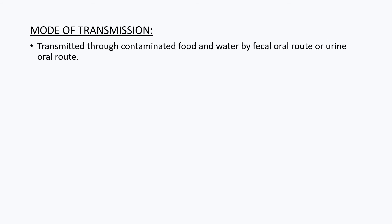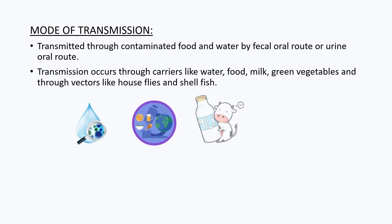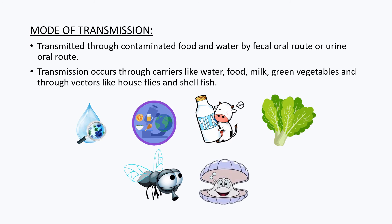Typhoid gets transmitted through contaminated food and water, by the fecal-oral route or urine-oral route. Transmission also occurs through carriers like water, food, milk, green vegetables, and through vectors like houseflies and shellfish.